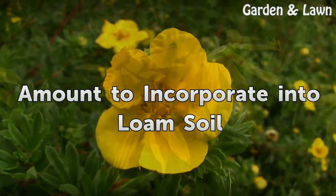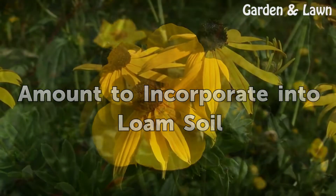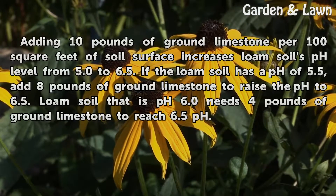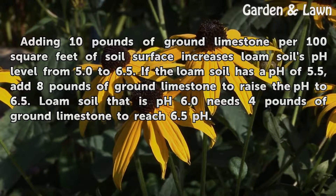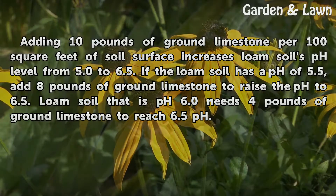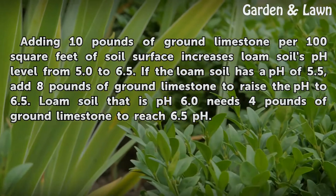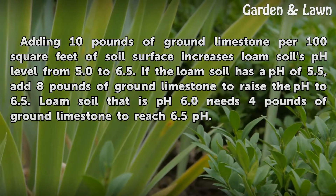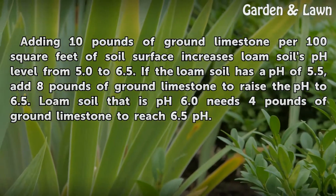For loam soil, adding 10 pounds of ground limestone per 100 square feet of soil surface increases the pH from 5.0 to 6.5. If the loam soil has a pH of 5.5, add 8 pounds of ground limestone to raise the pH to 6.5. Loam soil at pH 6.0 needs 4 pounds of ground limestone to reach 6.5.